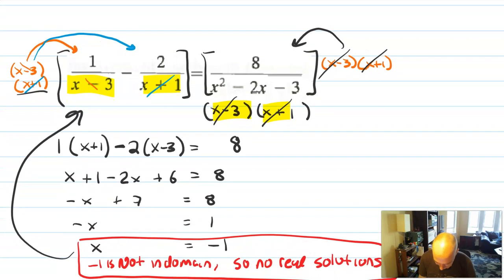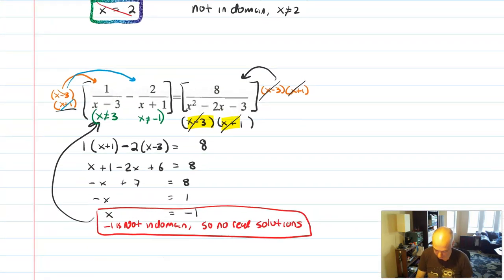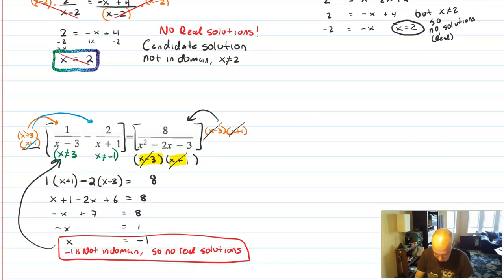It's not in the domain of the original. So no real solutions. And, of course, I could have noticed that right at the start by saying, oh, anything in the denominator is going to give me a restriction on x. Because x cannot be positive 3 or negative 1. So I could have listed that out as excluded values from the very start.